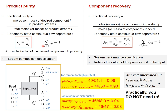Let's go to the second measure: recovery. Fractional recovery of species B in the top stream equals the amount of B in the top — 49 — divided by the amount of B in the feed stream — 50 — giving a result of 98%. You can read this as: 98% of the B component in the feed stream is recovered in the top stream.